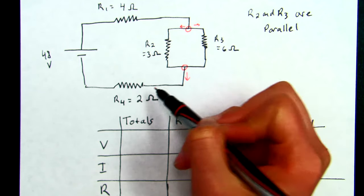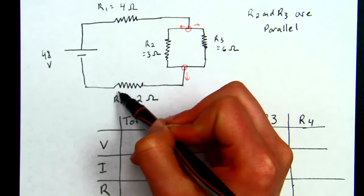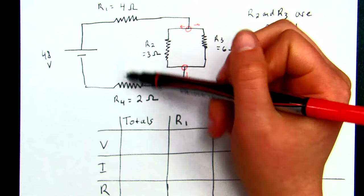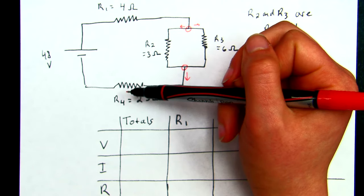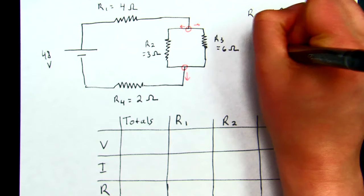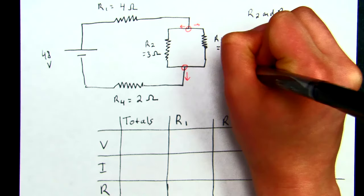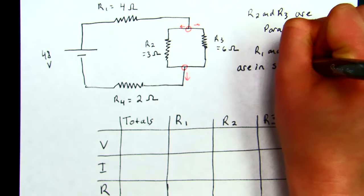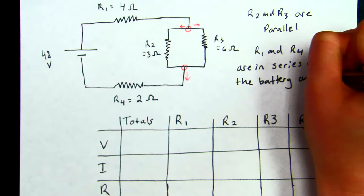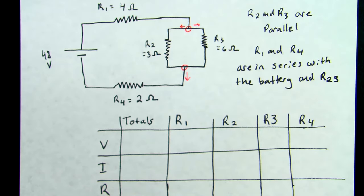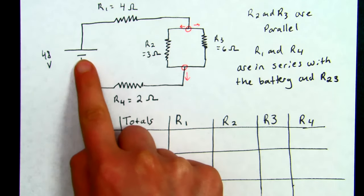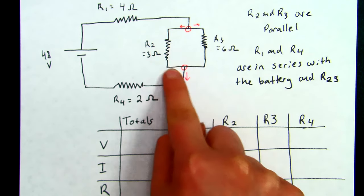And as we make our way back to the battery, we are forced to go through this fourth resistor here, R4, before we make it all the way back to the battery. And so since we don't have an option to go through R1 or R4, we know that those are what we call in series. They're in series with the battery.